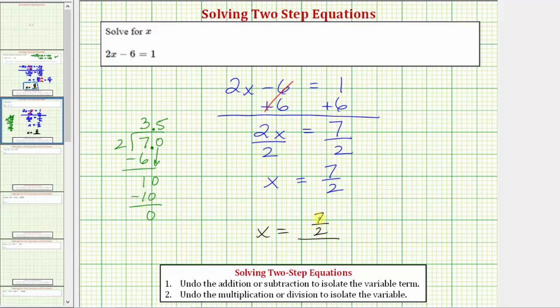So because 7 halves is equal to the terminating decimal 3.5, we could also express this as 3.5.